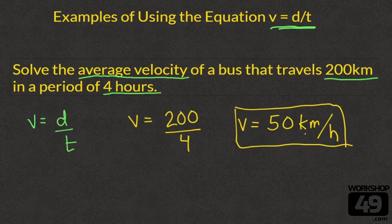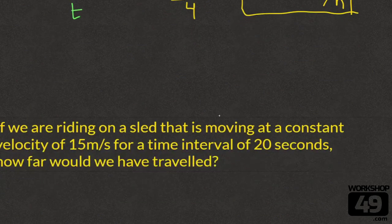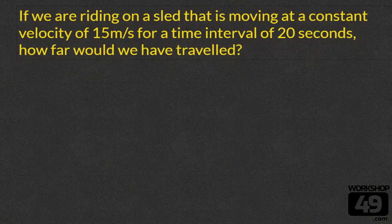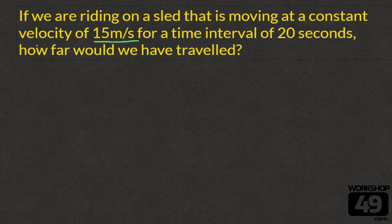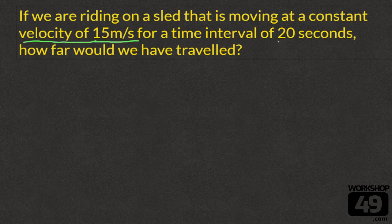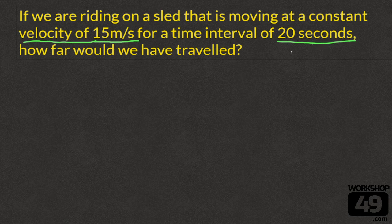That's example number one. Let's go down and look at a second example. In this example we are riding on a sled that is moving at a constant velocity of 15 meters per second. We're going to underline that, that's our velocity. Velocity of 15 meters per second. This time we know it. For a time interval of 20 seconds, we also know our time.